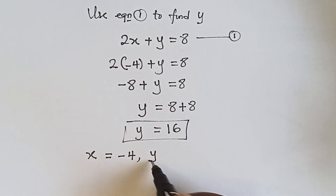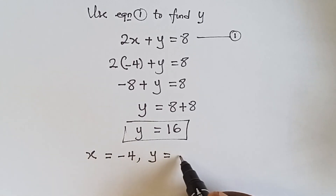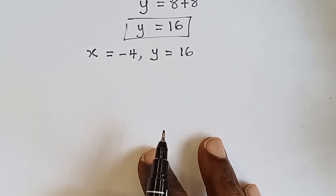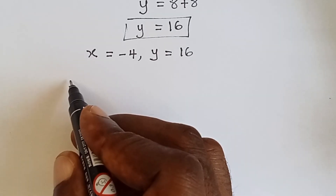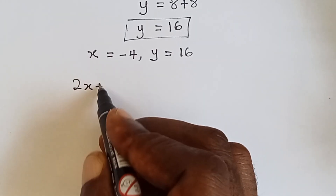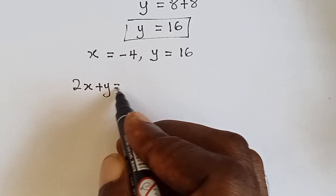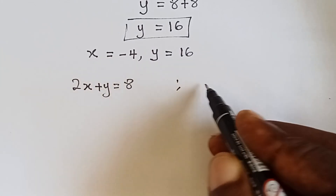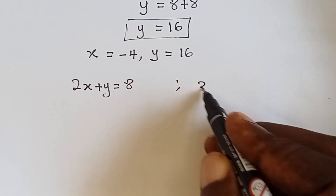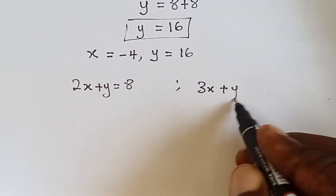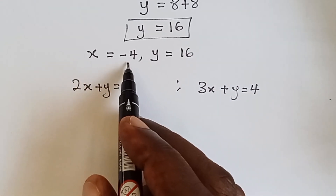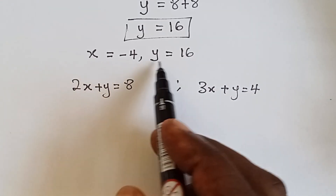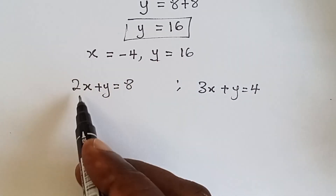Now let's verify our answers: x equals minus four, y equals 16. Equation one says two x plus y equals to eight, and equation two says three x plus y equals to four. Anywhere we see x we write minus four, and anywhere we see y we write 16.